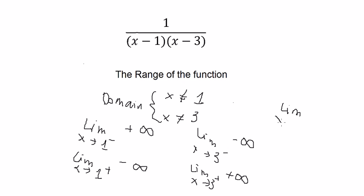When x approaches to positive infinity, you get about number 0. Why? Because 1 divided by positive infinity gives you about 0. Similar for the next one.